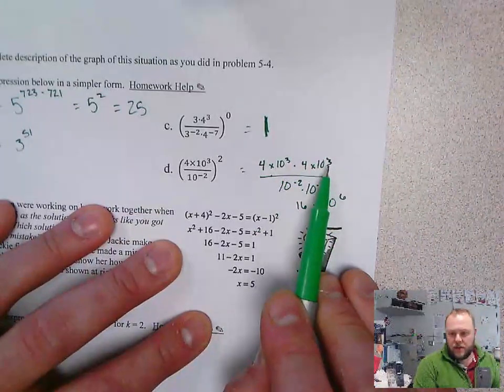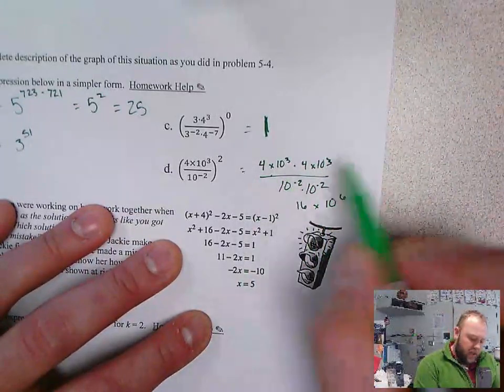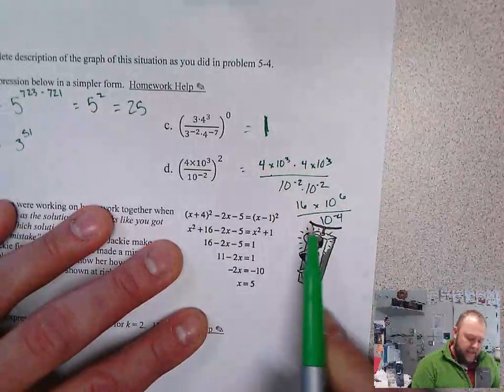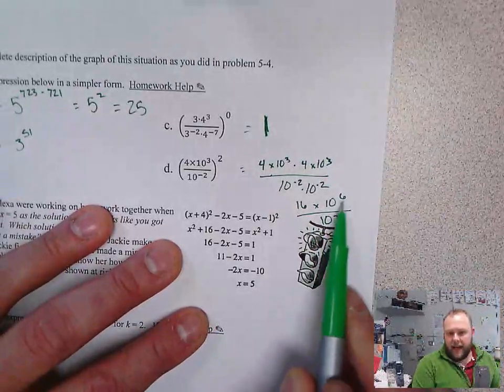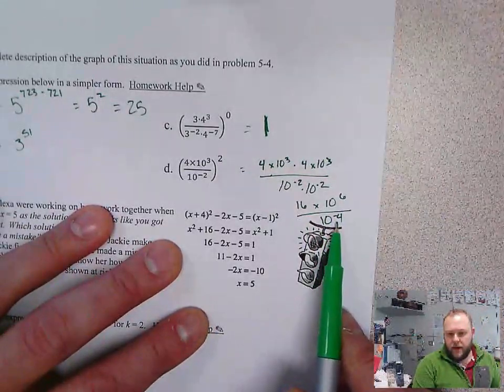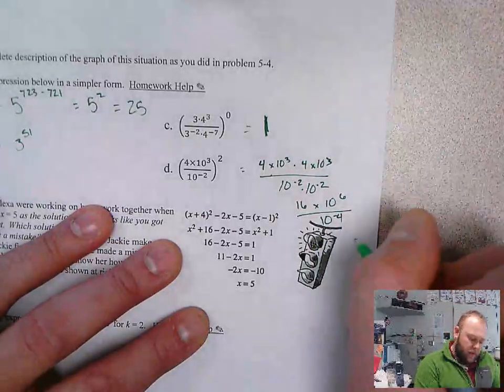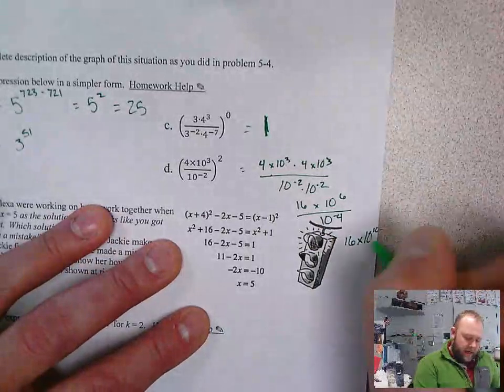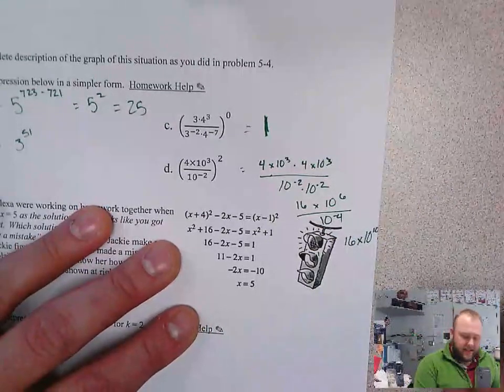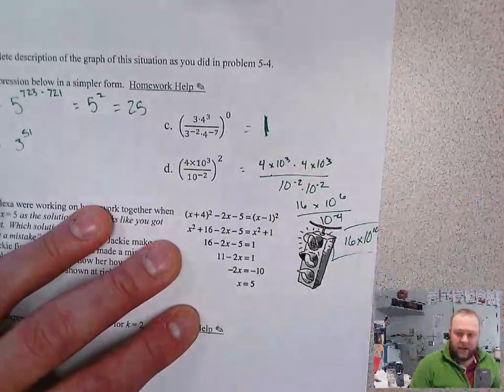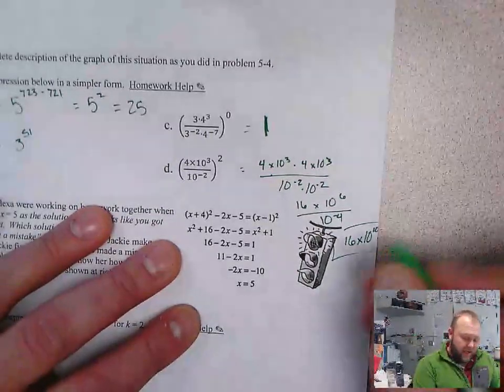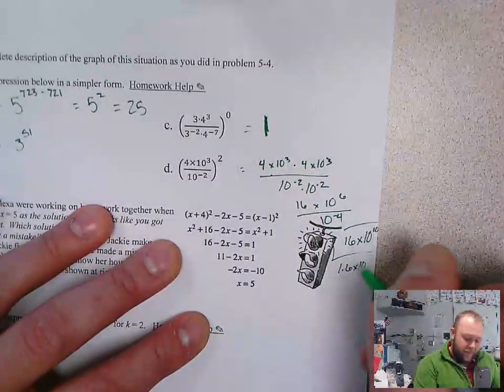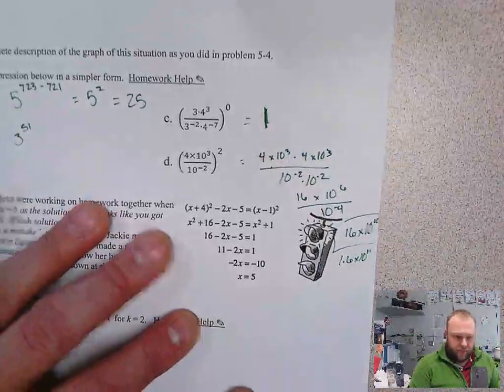Remember, we add our exponents when we're multiplying them with each other. Same thing down here. Divide by 10 to the negative fourth. I see I'm dividing by negative 4 for my exponent. So final answer is going to be 16 times 10 to the 10th. And then it didn't say to leave it in scientific notation, so we're just going to leave it just like that. If you wanted to do scientific notation, it'd be 1.6 times 10 to the 11th.